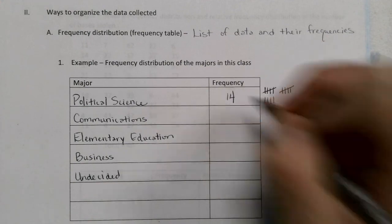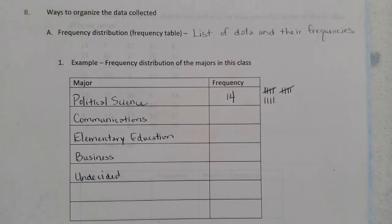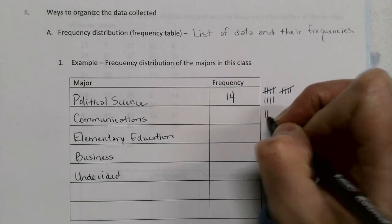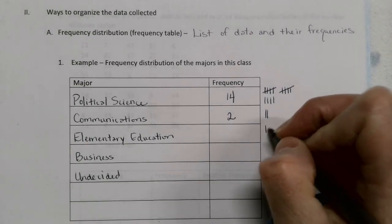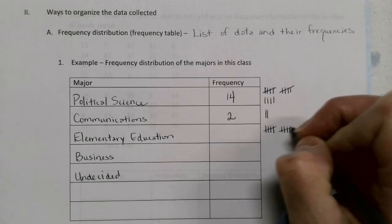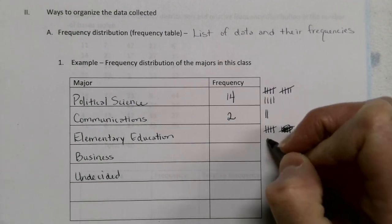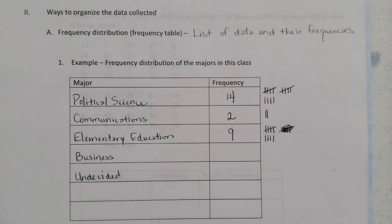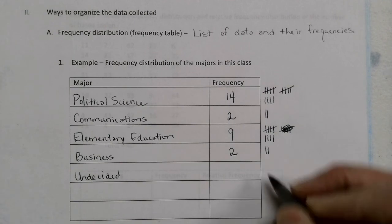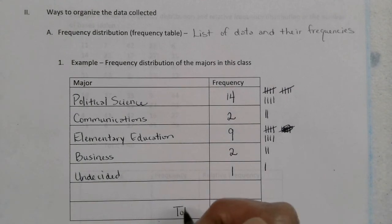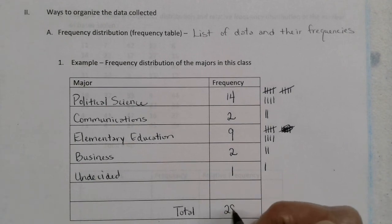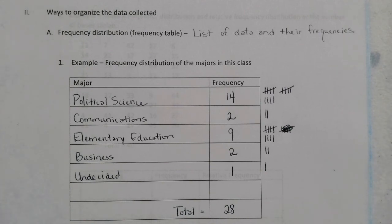Then I said, raise your hand if you're a communications major — and I had two students. Then raise your hand if you're an elementary education major — there were nine of them. Then business — there were two. And undecided — there was one fellow. That gave me a total of 28 students in the class that day. So this gave me a frequency distribution of all the majors in the class. When you make a frequency distribution, you do not have to show the tick marks — just list the frequencies. This is what a frequency distribution looks like: it simply shows the frequency of times that each piece of data shows up.